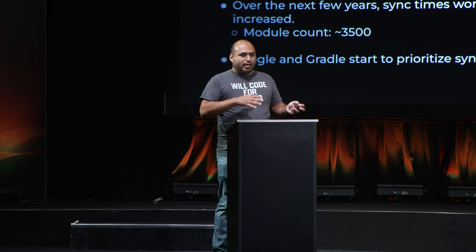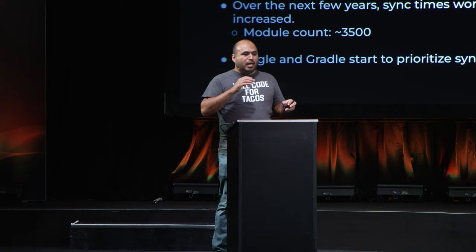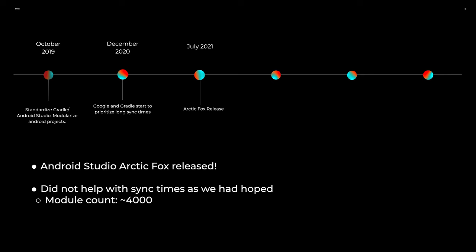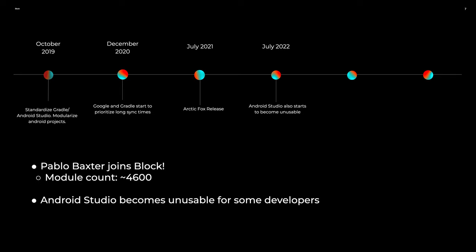During December 2020, Google, IntelliJ, and Gradle started prioritizing improving sync times for Android Studio. By July 2021, Arctic Fox was released and we were still dealing with long sync times at about 4,000 modules. In July 2022, I joined Square, and one of my first tasks was counting modules — we had 4,600. Android Studio was becoming nearly unusable: code completion, command-click navigation, and sync times were all getting worse and worse.